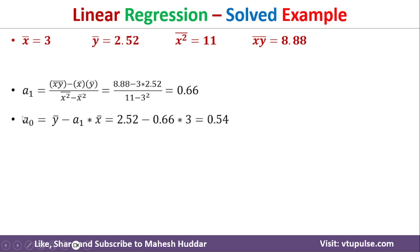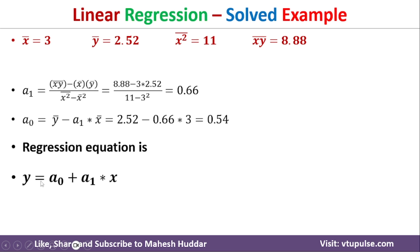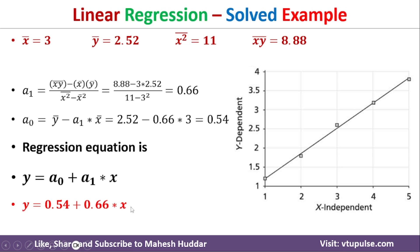With a1 calculated, we now find a0: a0 = y-bar minus a1 times x-bar. Substituting all values, we get a0 equal to 0.54. Now that we know both a0 and a1, the linear regression equation becomes: y = 0.54 + 0.66 × x.